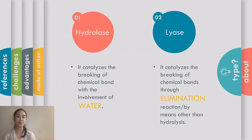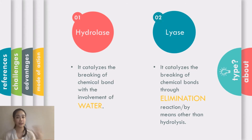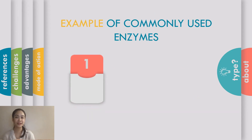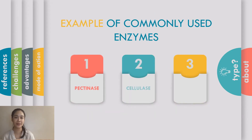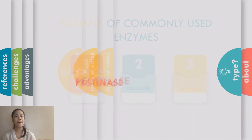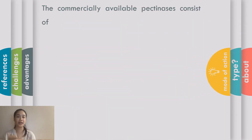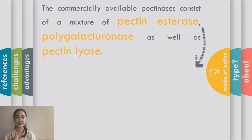Now, let us dive into the examples of commercially available enzymes in the market, including pectinase, cellulase, and amylase. Pectinase is a mixture of enzymes consisting of pectin esterase, polygalacturonase, and pectin lyase.